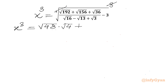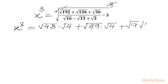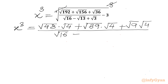Plus square root of 156, which we can write as square root of 39 times square root of 4. And square root of 36 can be written as square root of 9 times square root of 4. The denominator will be square root 16 minus square root 13 plus square root 3, minus 3. Now we have root 4 common in the numerator.